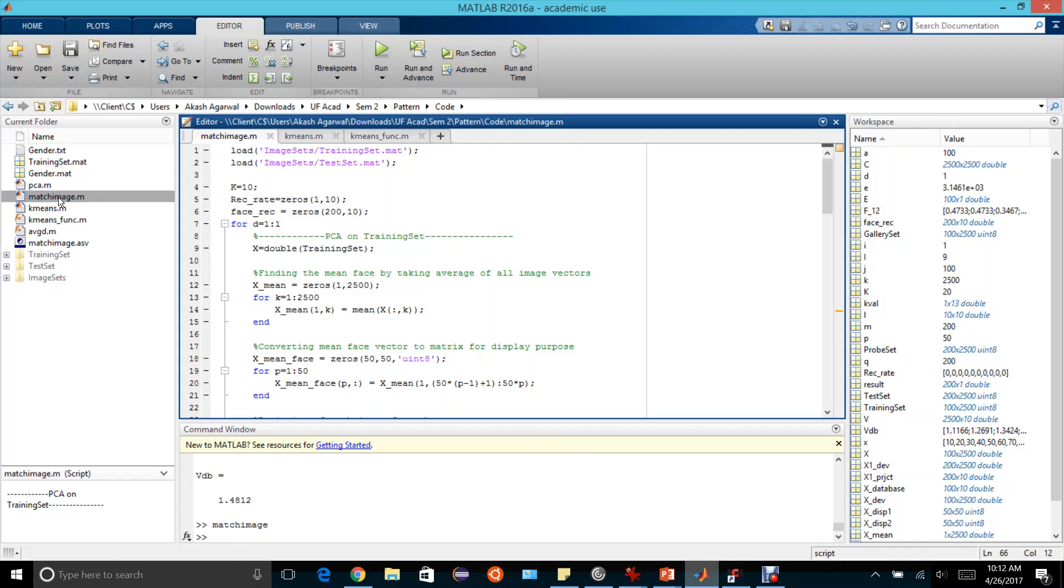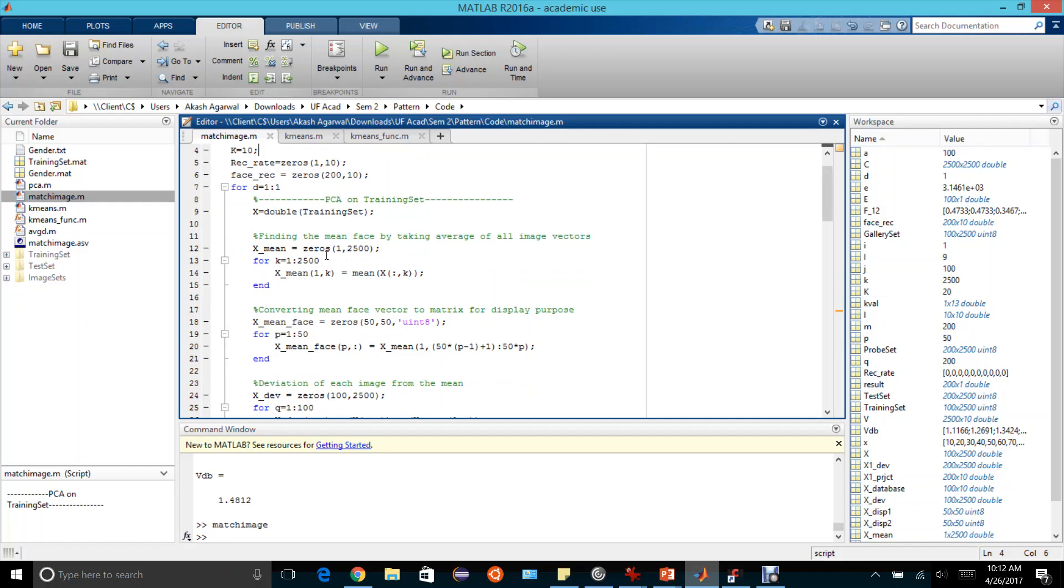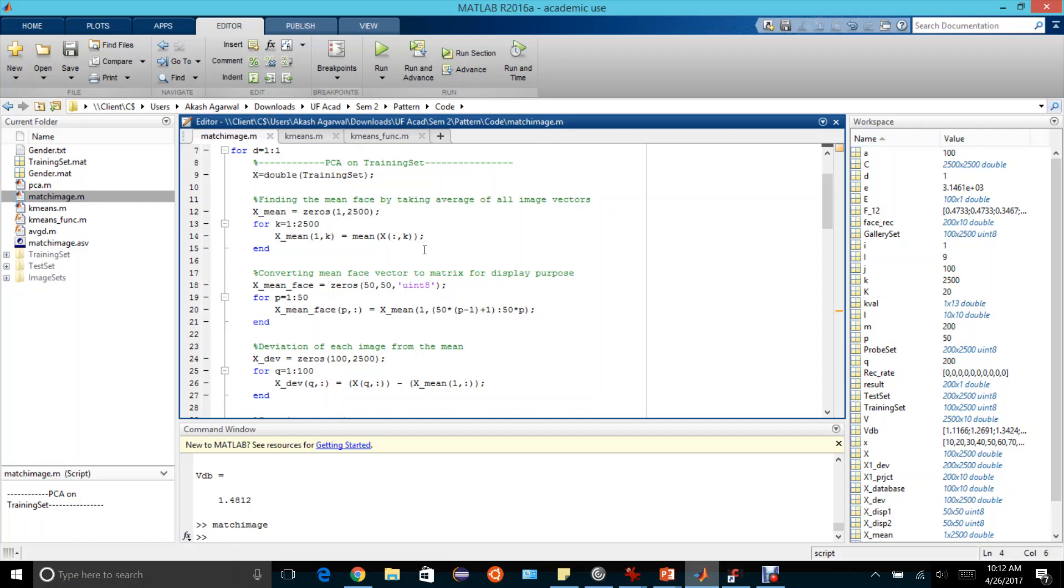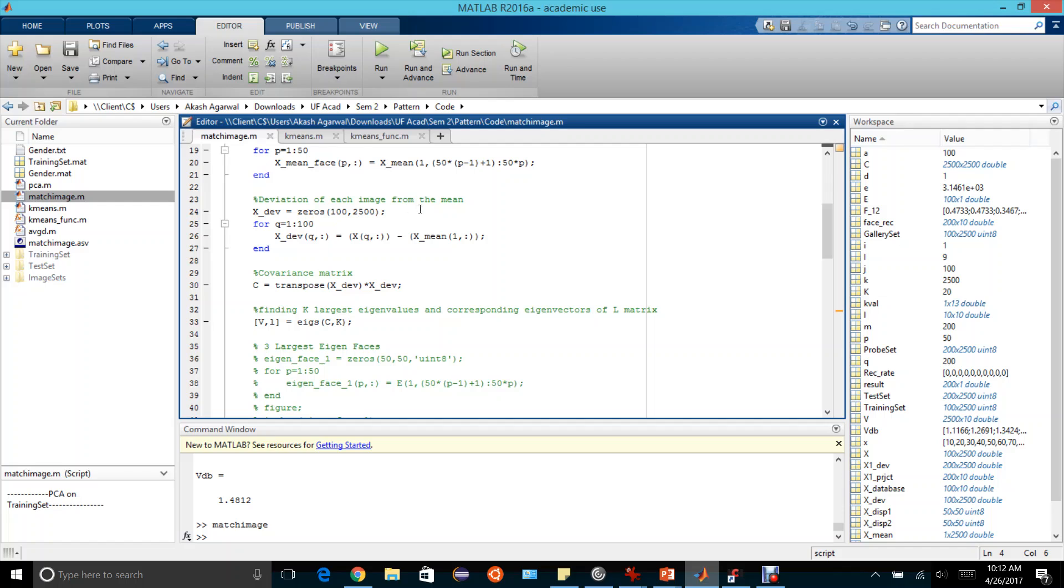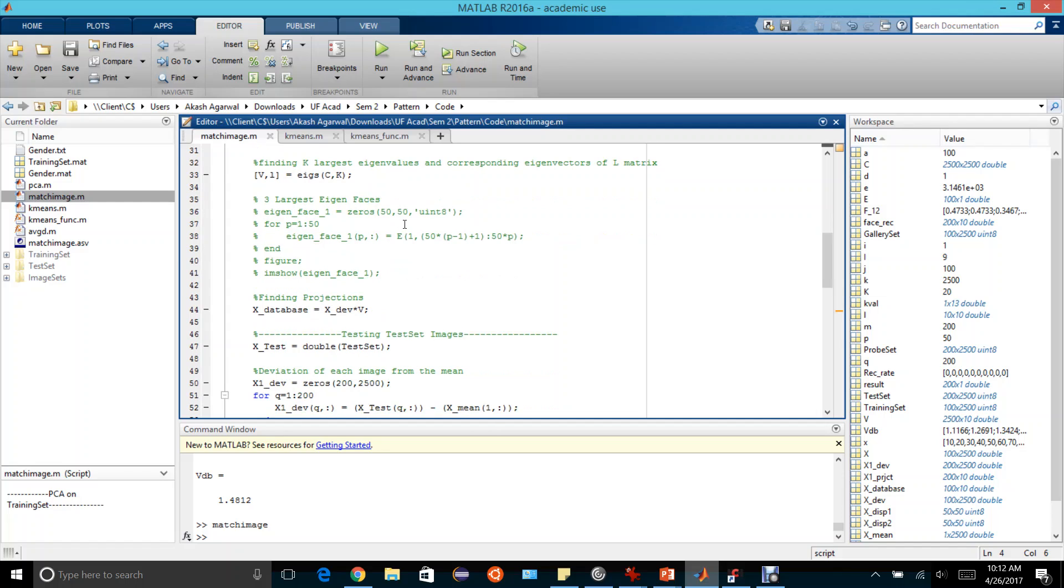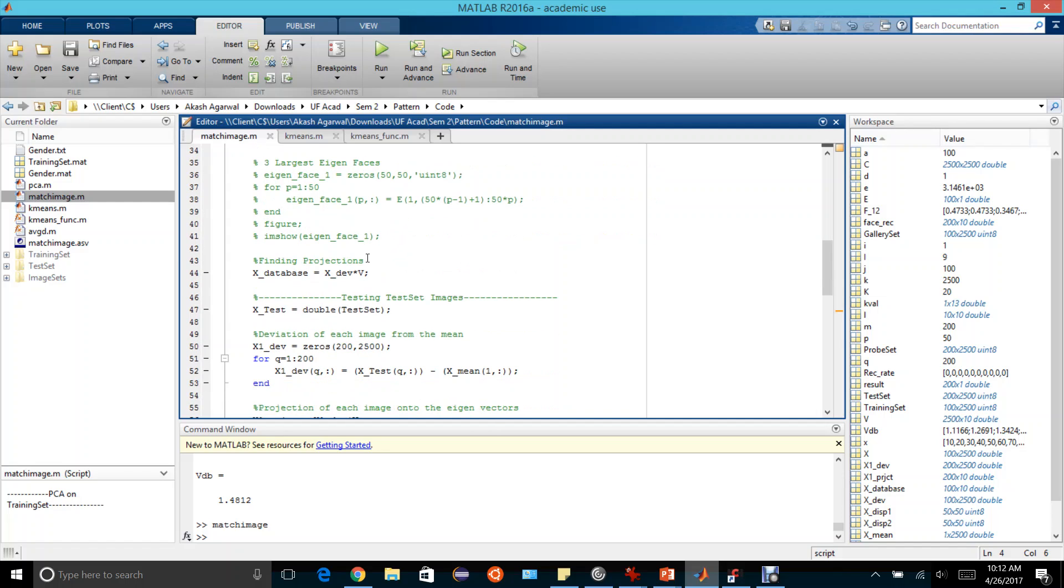Now let's go to the code. I have done a comparison study for all 100 people. Here to test the algorithm, we start with selecting the first person from the test set. Then we find the mean face by taking the average of all image vectors, convert the mean face vector to matrix just for displaying purposes, and the deviation of each image from the mean is calculated.